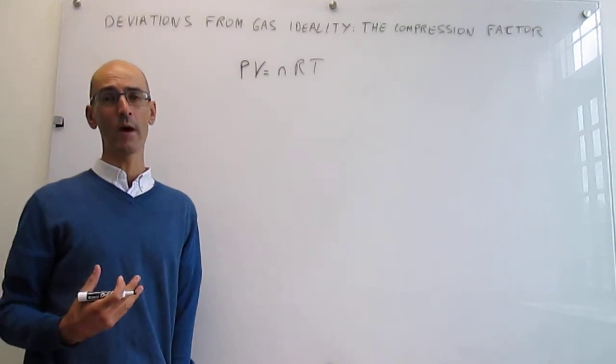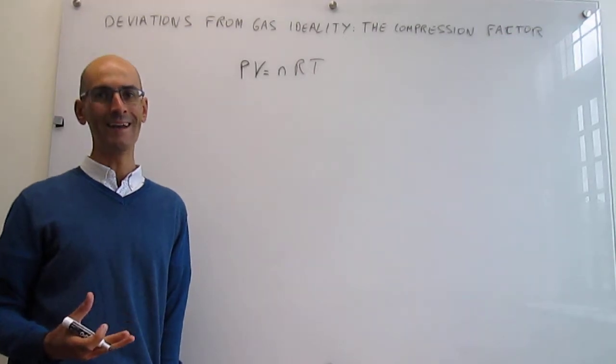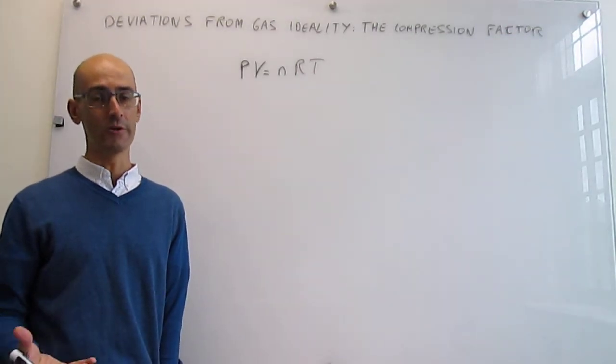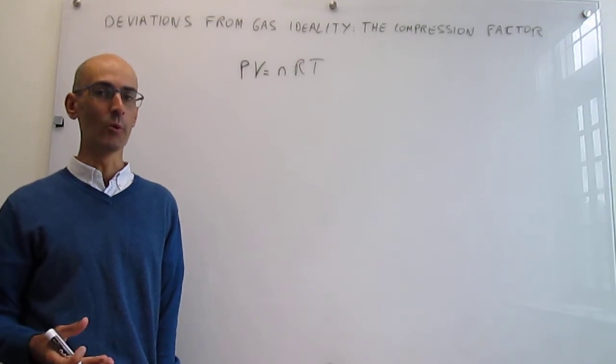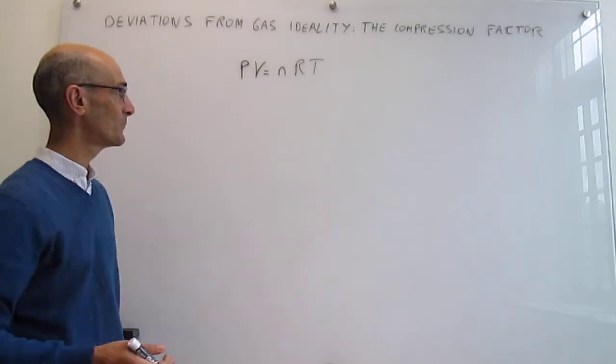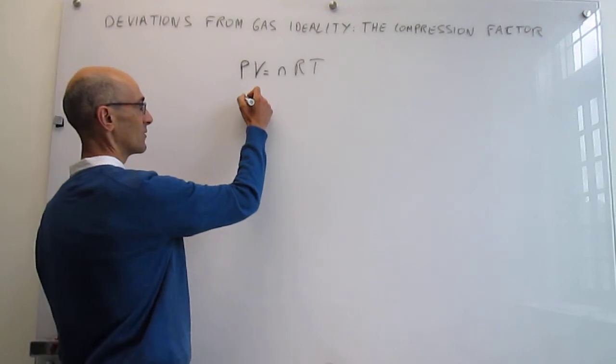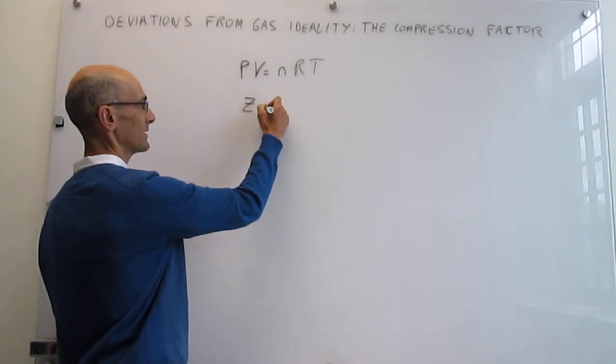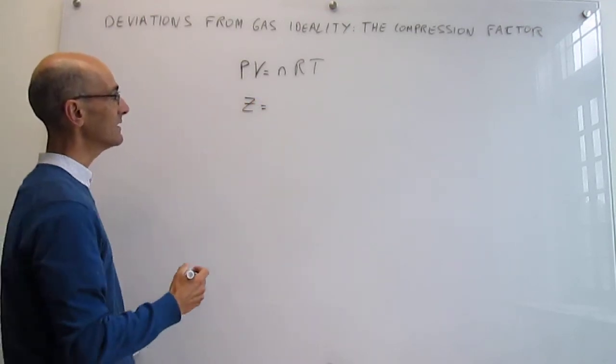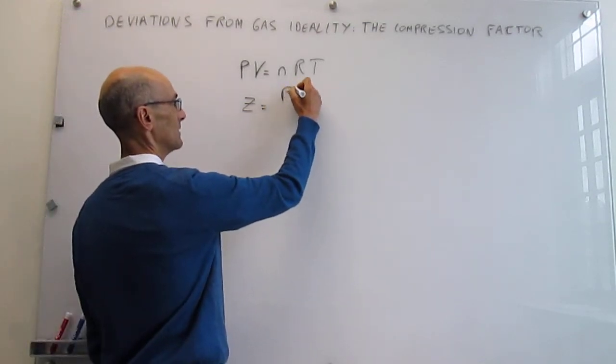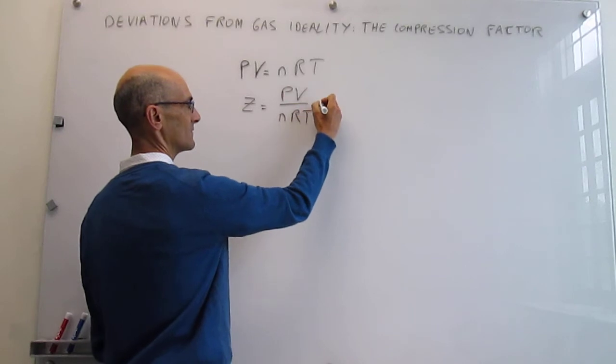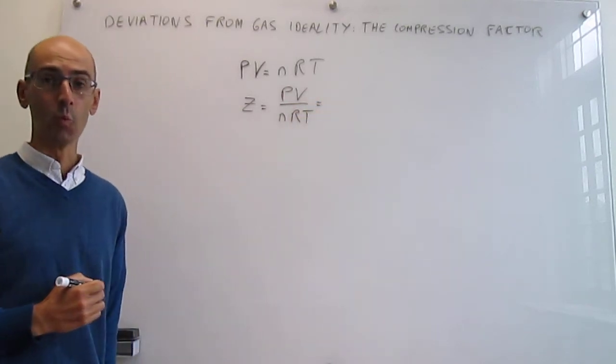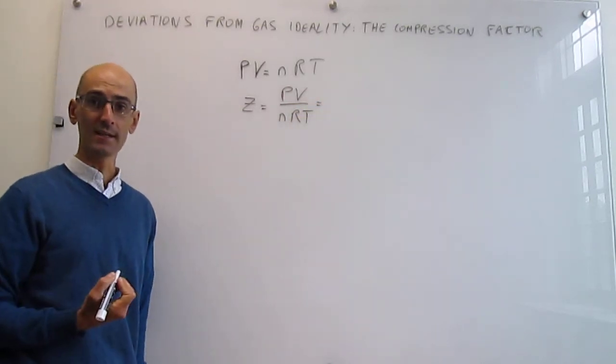A way to characterize whether you are in ideal behavior or not is to calculate something called the compression or compressibility factor. We can define that compressibility factor as Z = PV/nRT. This value should be equal to 1 if the gas is ideal.